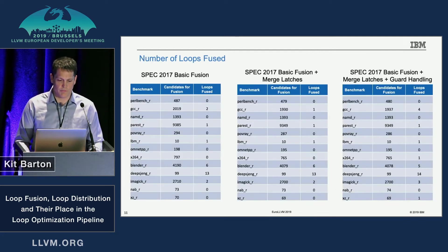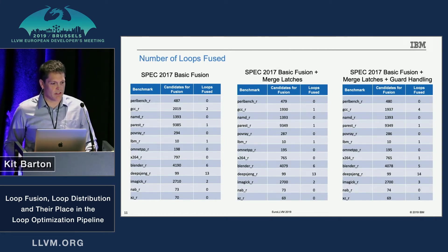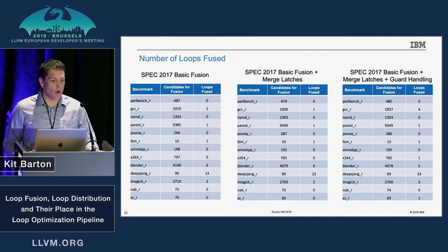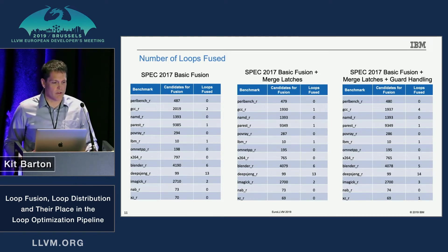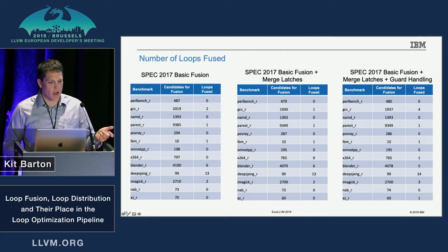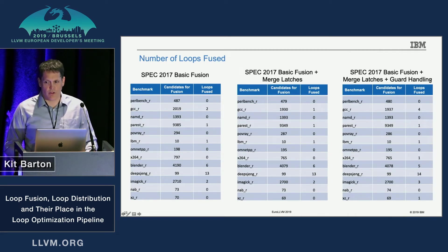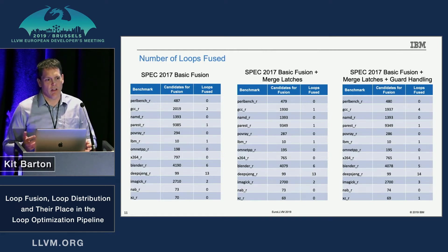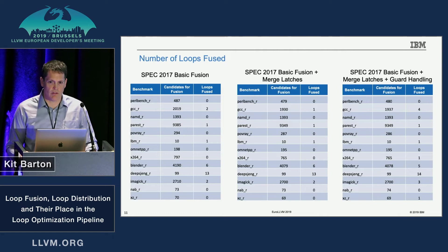These are the next two patches ready to go for fusion once the basic patch lands. We collected static result counters from SPEC 2017. Performance analysis shows no difference — positive or negative — from the fusions, although we are seeing a slight increase in the number of loops fused by combining latch merging and proper guard block handling. I personally think making guards part of the canonical form is a more robust solution.